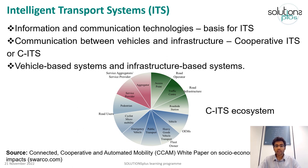The figure here shows the C-ITS ecosystem, which can be visualized in a circular form with four component categories: road operator and road infrastructure, service aggregators or service providers, road users or fleet owners, and OEMs or original equipment manufacturers. Interactions among these four categories can be bi-directional, that is both in the clockwise and anti-clockwise direction.